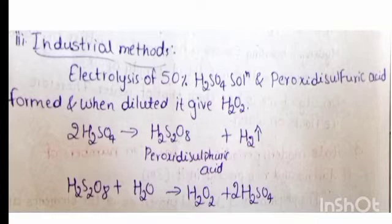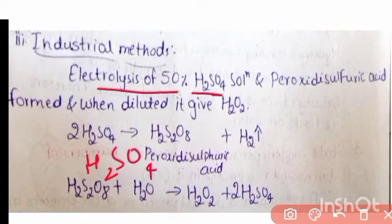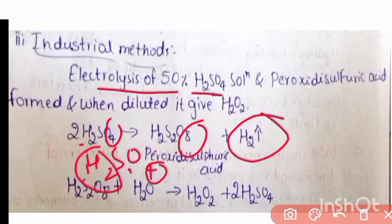Third method: Industrial method. Electrolysis of 50% H2SO4 solution. Two H2SO4 molecules undergo electrolysis. In the first step, hydrogen gas is eliminated, leaving H2S2O8, which is also known as peroxydisulfuric acid.